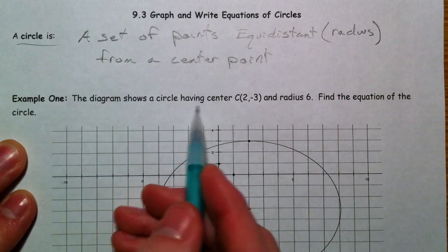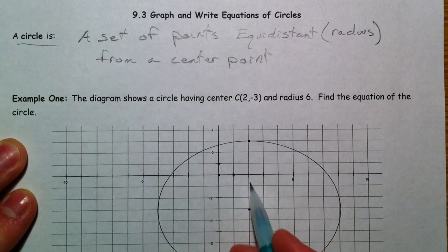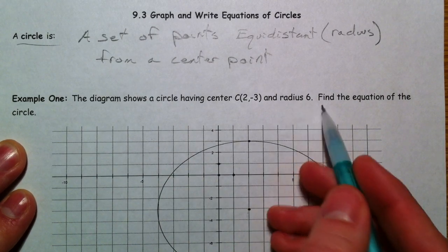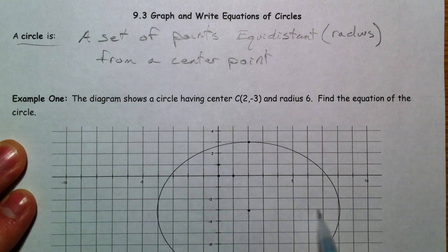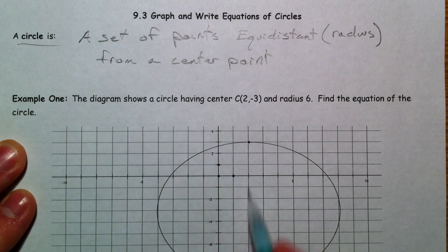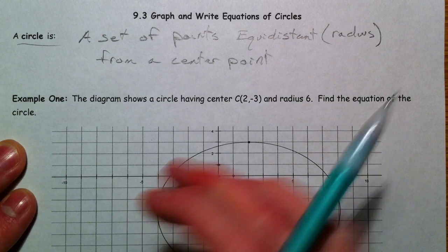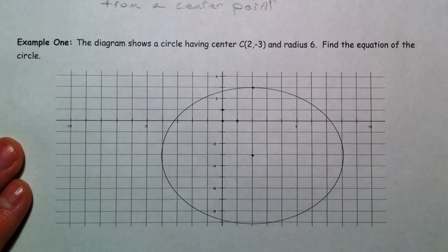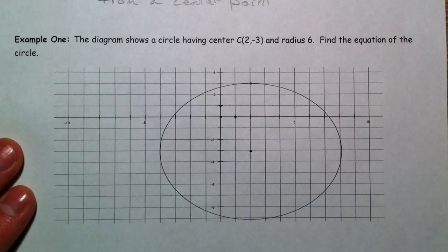So, the diagram shows a circle having center 2, negative 3, and a radius of 6. So you see 1, 2, 3, 4, 5, 6. 1, 2, 3, 4, 5, 6. Up and down 6. Now, it got stretched out a little bit. It kind of looks more like an oval or an ellipse.